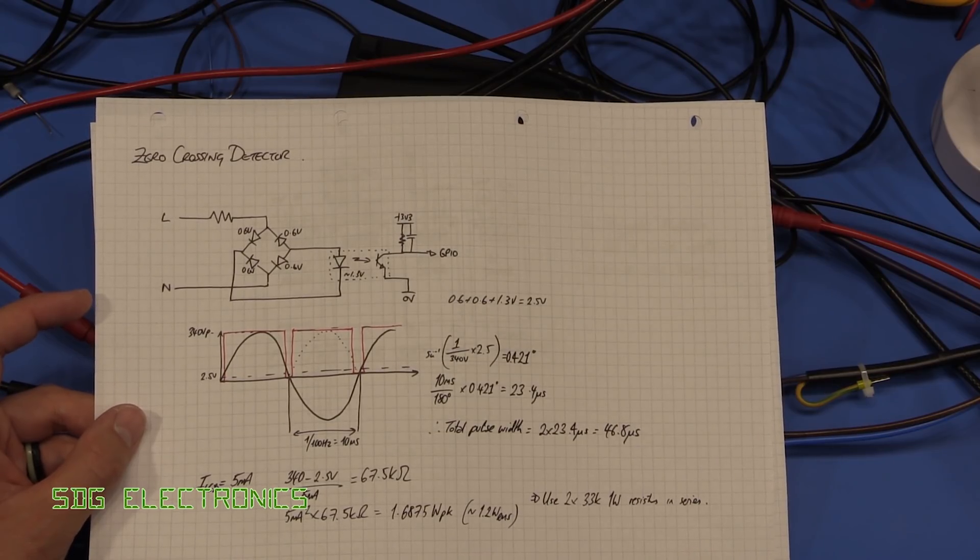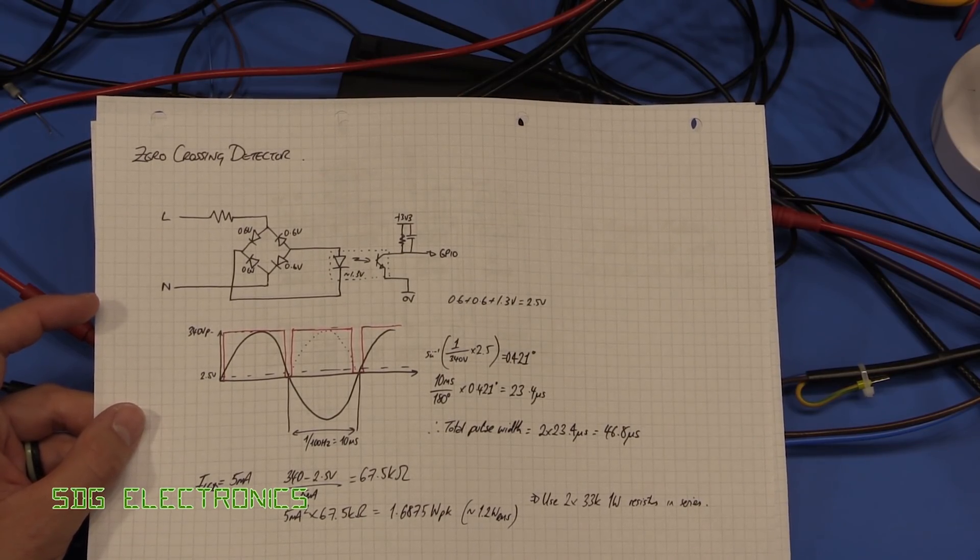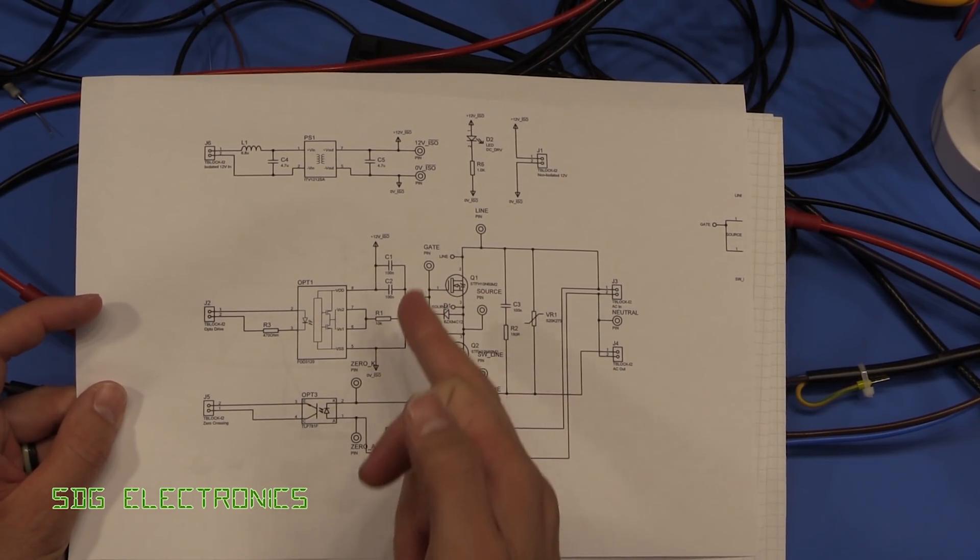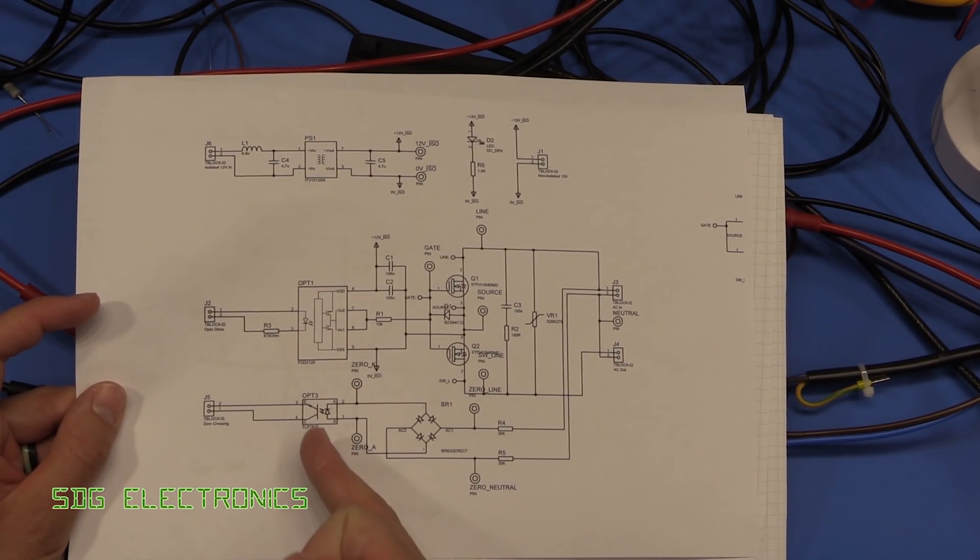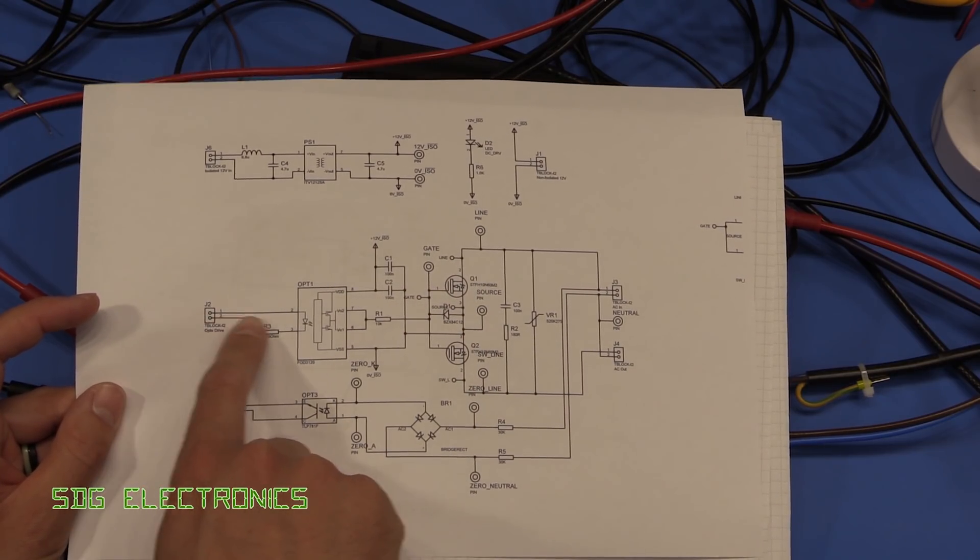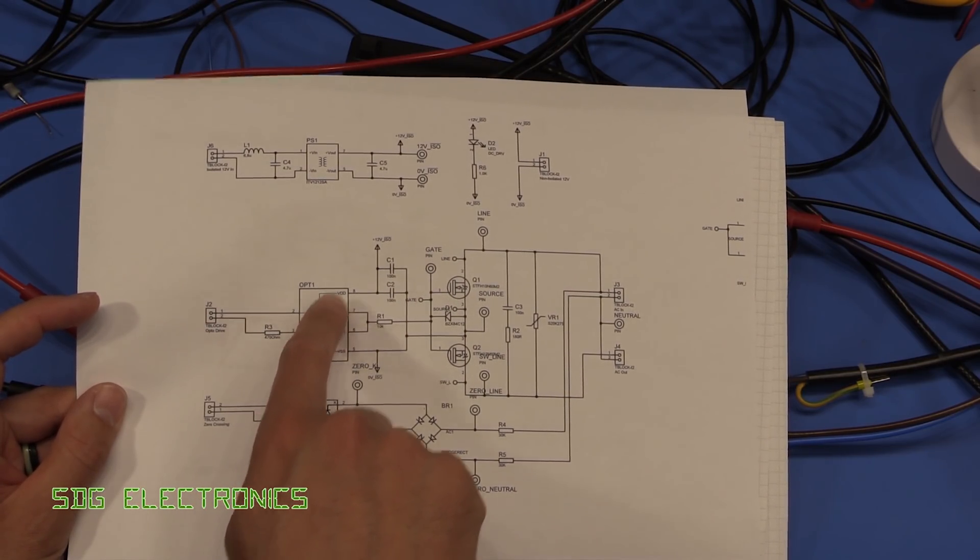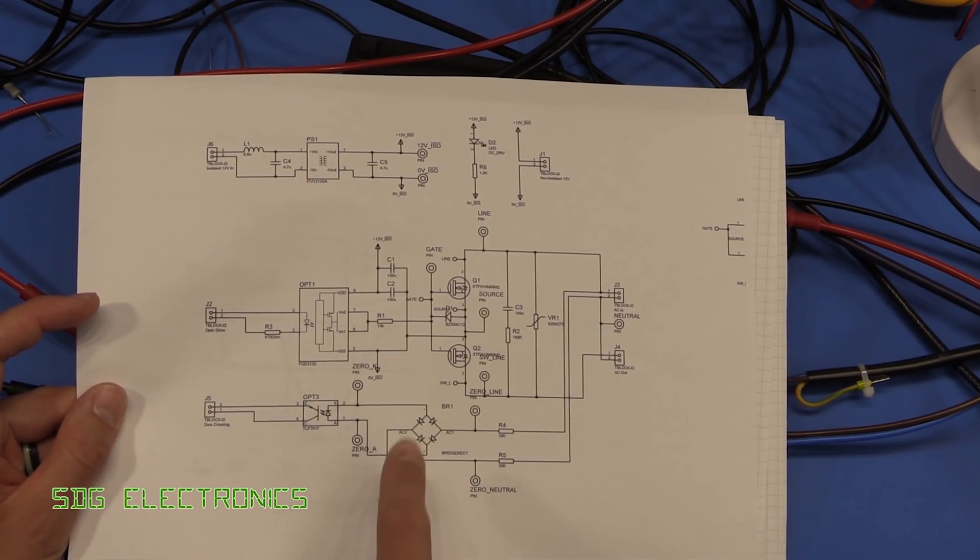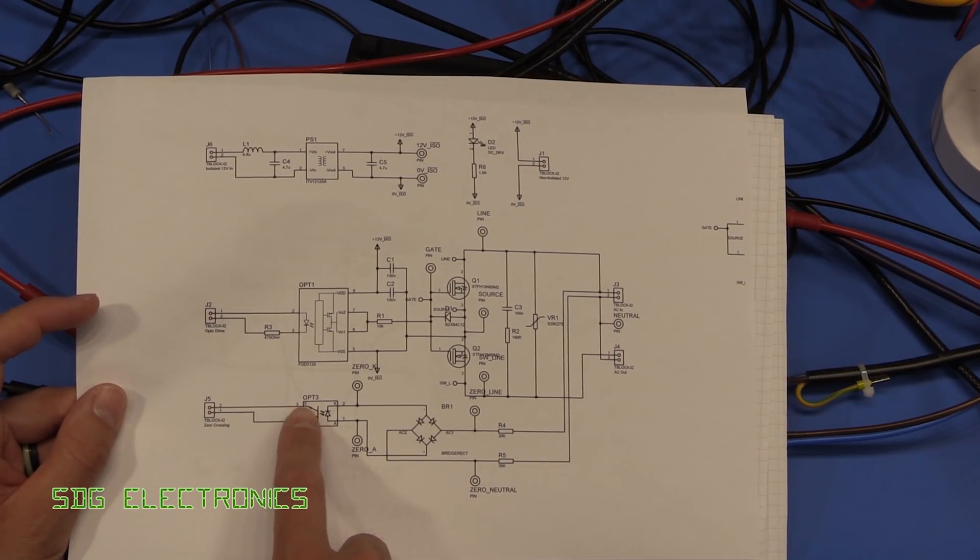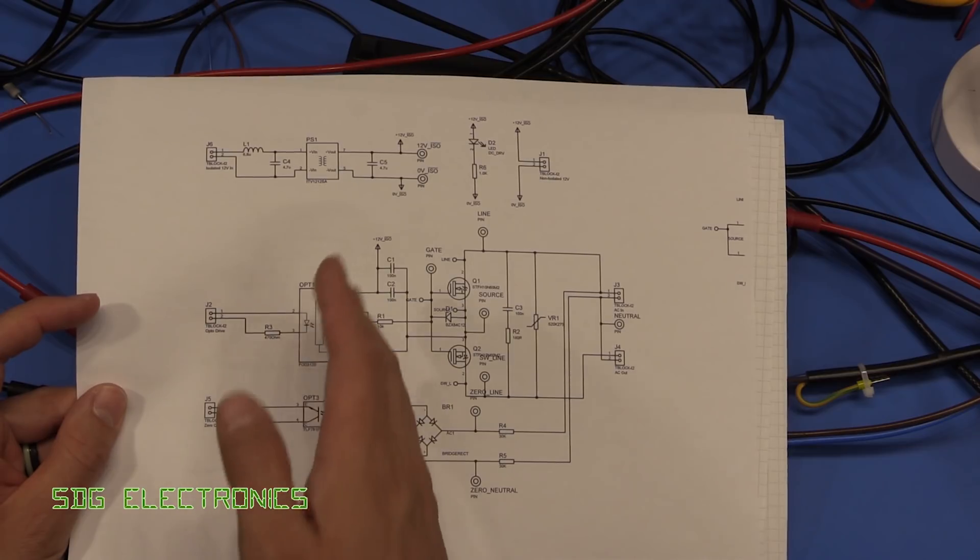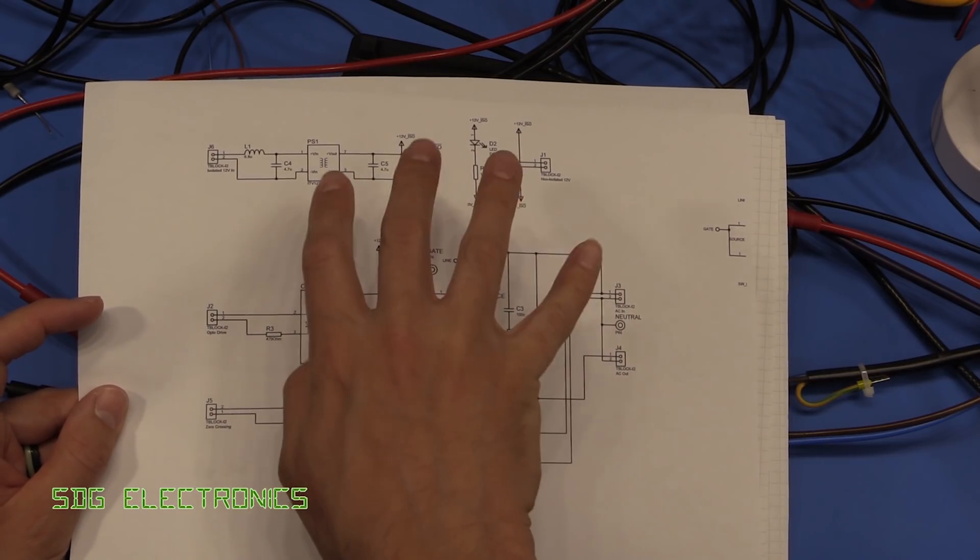So the overall schematic for the board that had the MOSFETs on is here and we've got this isolation point all the way through here and in order to drive the MOSFETs, we're driving it through an opto coupled interface, to power the electronics on this side we've got an isolated DC to DC converter and to detect when the zero crossing point occurs we've got this opto isolator again which is providing our isolation.